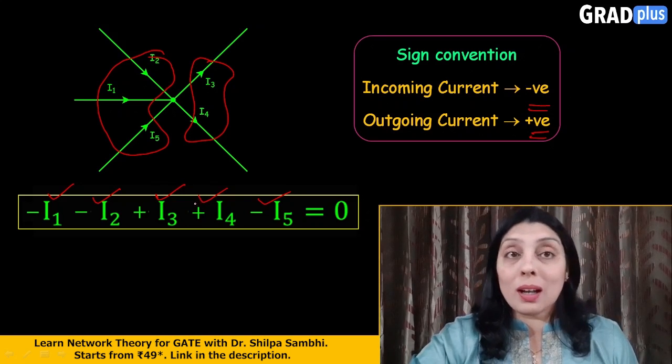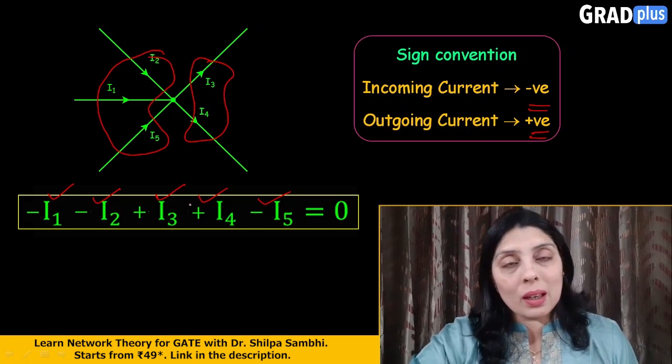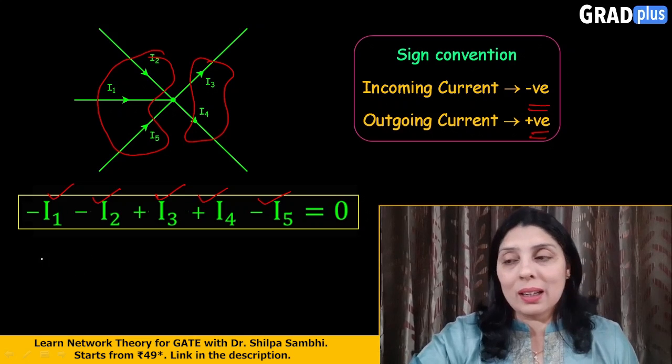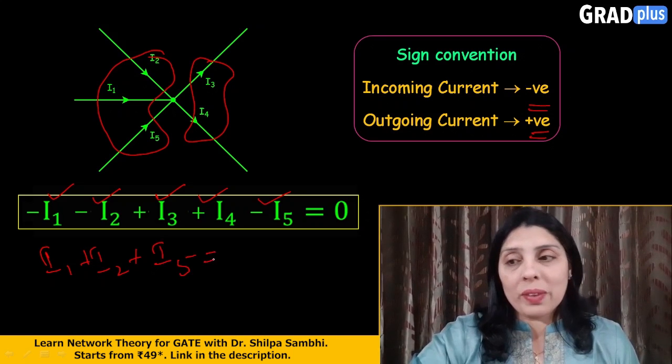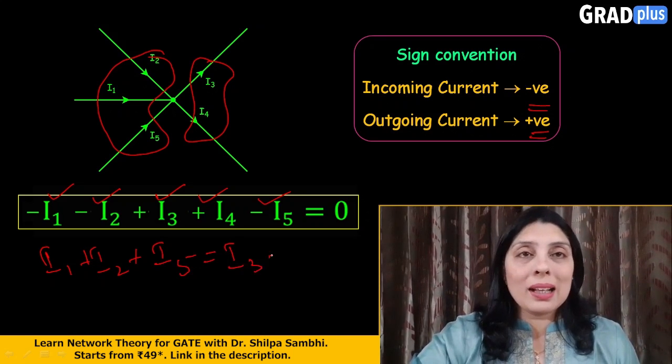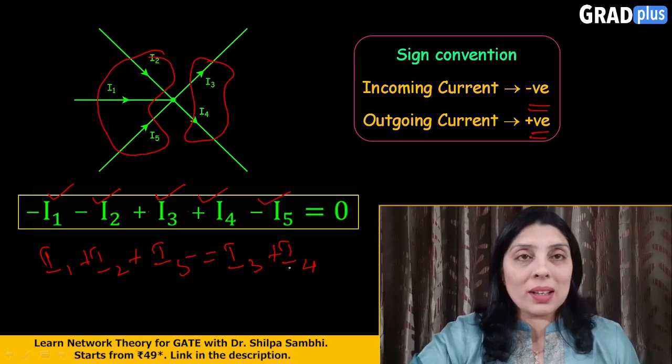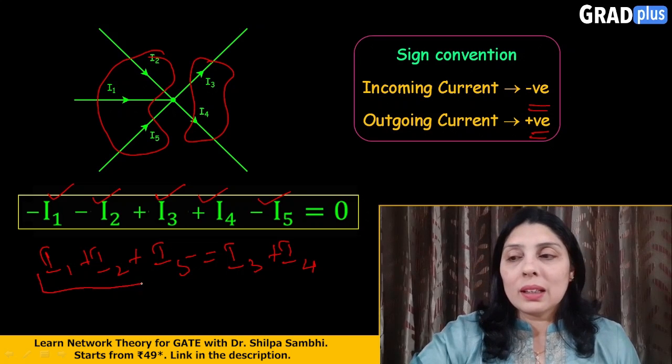So rewriting the equation I will be getting I1 + I2 + I5 that is equal to I3 + I4. So the same thing which we have just seen in the previous sign convention, that the summation of incoming current is equal to the summation of the outgoing current.